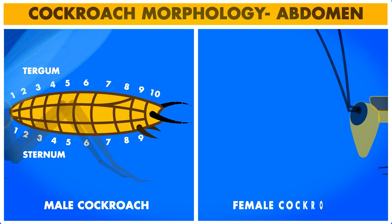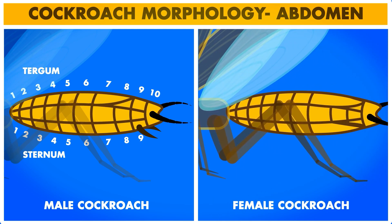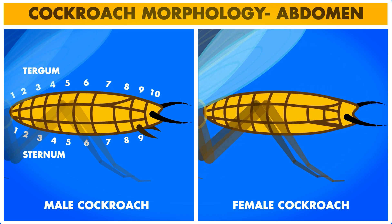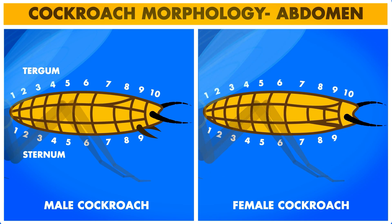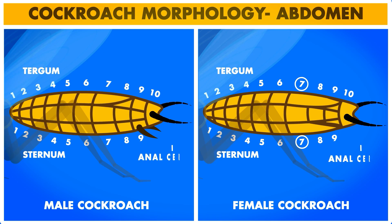In females, the 7th tergum covers the 8th and 9th tergum, and the 7th sternum covers the 8th and 9th sternum. So only 7 sternums are visible in female abdomen. In both males and females, long and thick structures called anal cerci arise from the 10th tergum. These structures contain tactile and phonoreceptors.